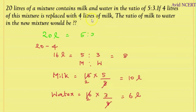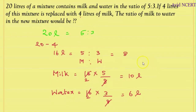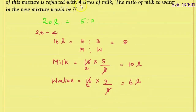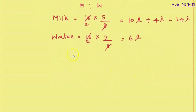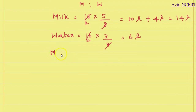This mixture is now replaced with 4 liters of milk, which means 4 liters is added to the 10 liters of milk, giving 14 liters of milk. The water remains at 6 liters. So in the new mixture, milk is to water equals 14 liters is to 6 liters.